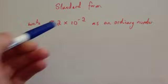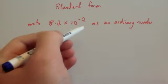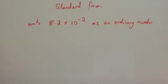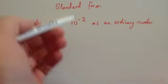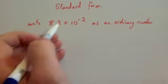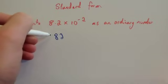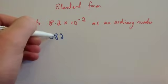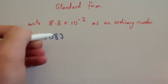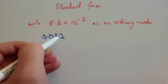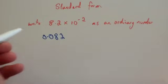This time we've been asked to write 8.2 times 10 to the minus 2 as an ordinary number. Remember, 10 to the minus 2 is the same as 0.01 — that's 1 hundredth — and when we times by that, it's the same as dividing by 100. So this is going to get smaller; whenever the power is negative, it's going to be a decimal number. That means we move the decimal place two places to the left. Moving it once gives 0.82, and moving it twice gives 0.082.